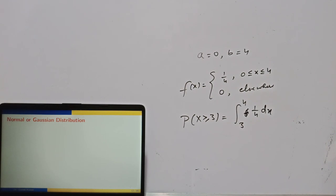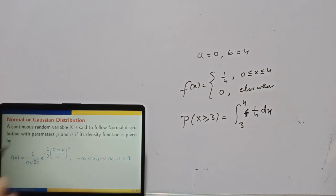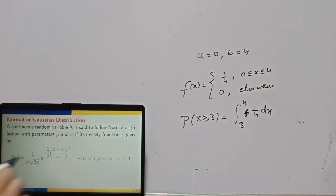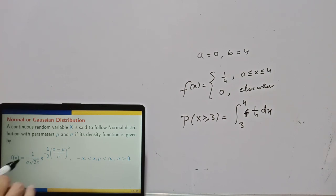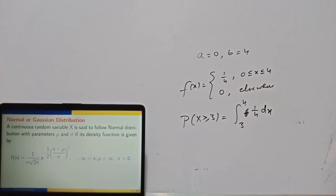The next and very important distribution is the normal or Gaussian distribution, of real practical importance. A continuous random variable x is said to follow a normal distribution with parameters μ and σ if its density function is f(x) = (1/(σ√(2π))) · e^(−½((x−μ)/σ)²), where x and μ can be any real numbers but σ must be positive. Here μ is the mean and σ is the standard deviation.